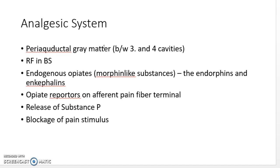Chemical stimuli stimulate slow pain. These chemicals excite a type of pain where tissue is damaged. They can include potassium ions, histamine, serotonin, bradykinin, acid, and proteolytic enzymes, which increase membrane permeability. Bradykinin is the most common and most pain-eliciting chemical. There is no adaptation to pain in nociceptors — you cannot adapt to it.